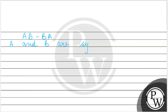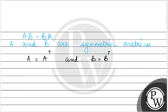Since A and B are symmetric matrices, we have A is equal to A transpose, and B is equal to B transpose. These are our given conditions for the proof.